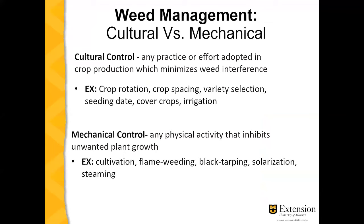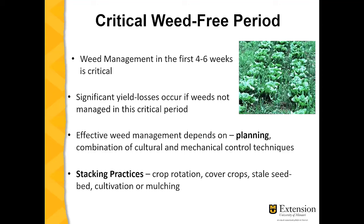Let's start off by defining cultural versus mechanical weed control. Cultural control involves adopting different practices to minimize weed interference, and this could include crop rotation, spacing, variety selection, seeding date, cover crops, and irrigation. Whereas mechanical control is a physical activity that inhibits unwanted plant growth and could include practices such as cultivation, flame weeding, tarping, or steaming.